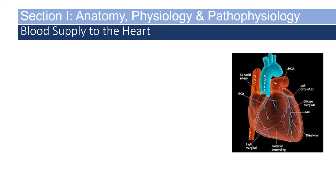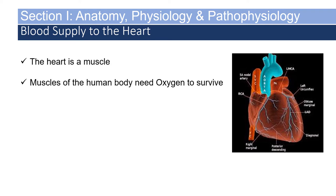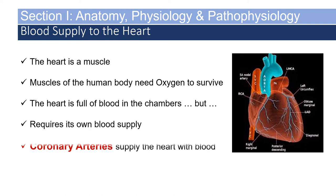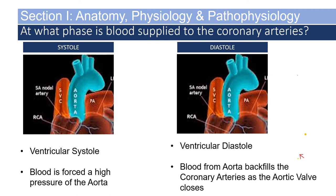The heart is a muscle, and muscles need oxygen to survive. The heart is full of blood in its chambers, but requires its own blood supply from the coronary arteries. During ventricular systole, blood is forced from the left ventricle through the aortic valve into the aorta. However, the pressure is too high for coronary filling at that time. It is during ventricular diastole, when the aortic valve closes, that blood returns into the aorta and passively fills the coronary arteries.